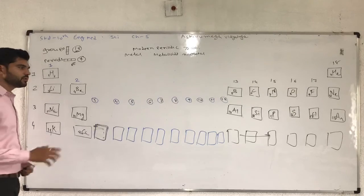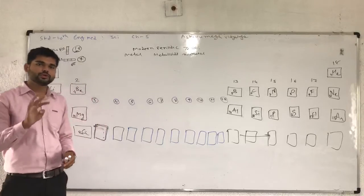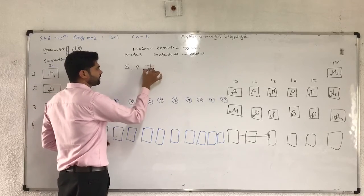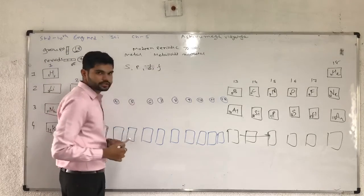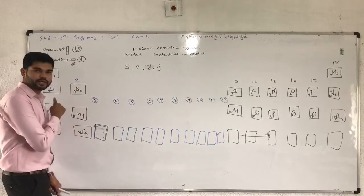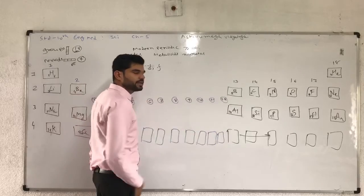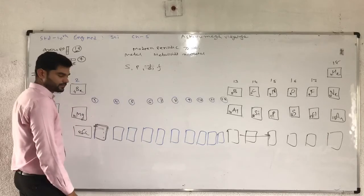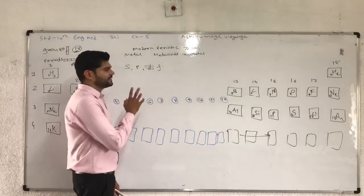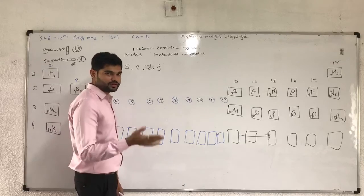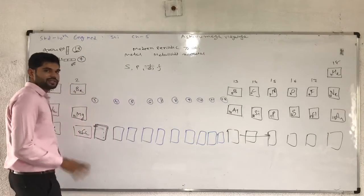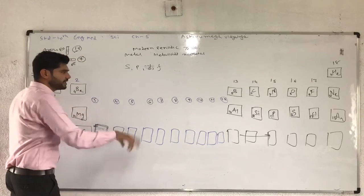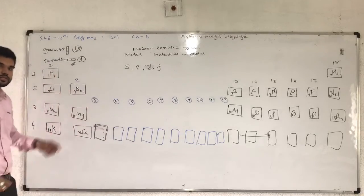The periodic table can be divided by 4 blocks: first is S, P, D, and F. This block can be represented by S, this can be blocked by D. F block can be separated, but these 4 blocks can be divided. You will learn this in standard 12th. Now in standard 10, you learn 18 groups and 7 periods arrangement.